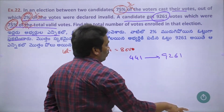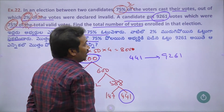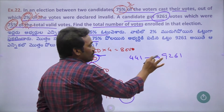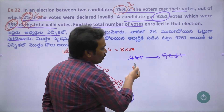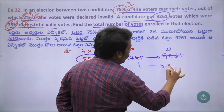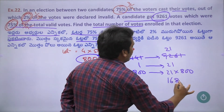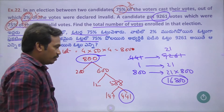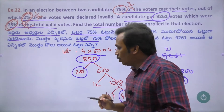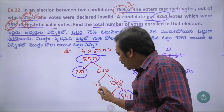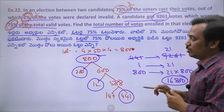9260 votes. So we have to set up the equation: 800 multiplied by 441 divided equals 9260. Then 8800 equals a value. We have to equate 41 parts with 21 parts, and since 21 squared equals a value, 1 part equals 800. So 21 into 800 gives us 16800.